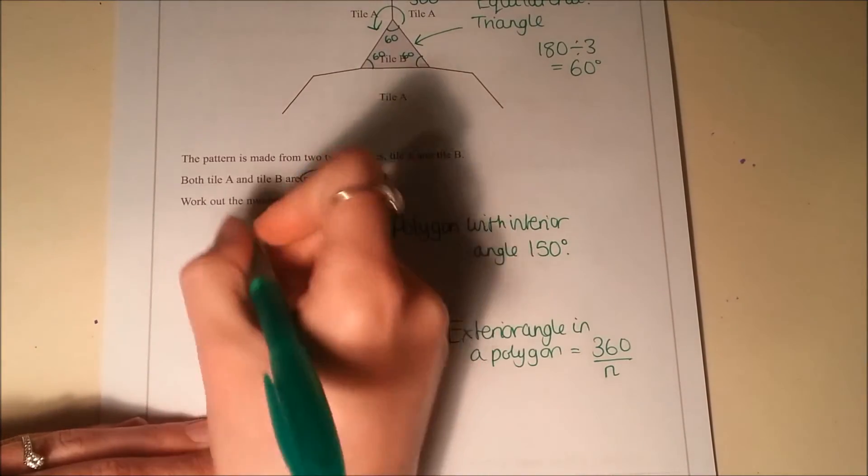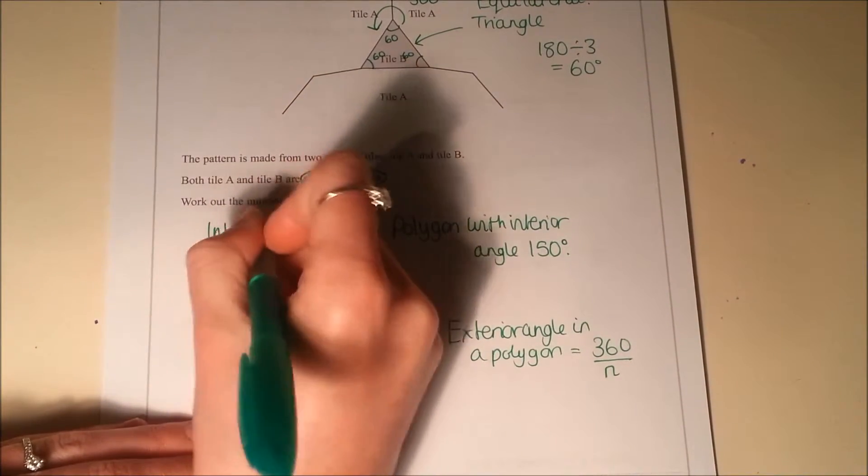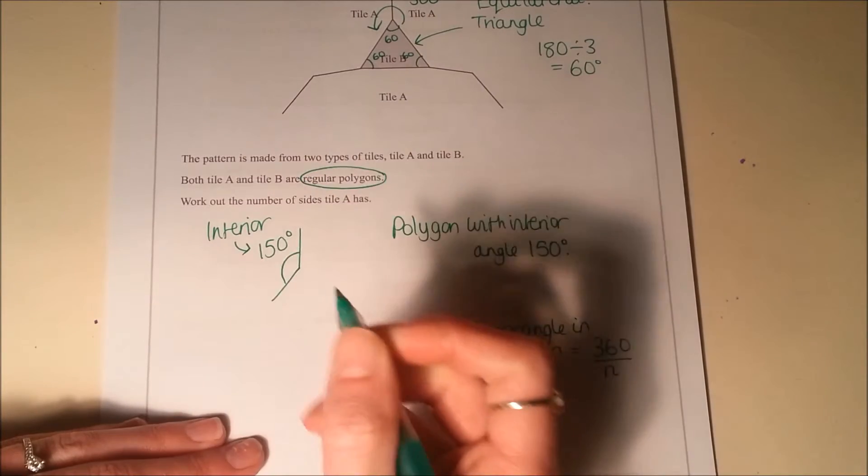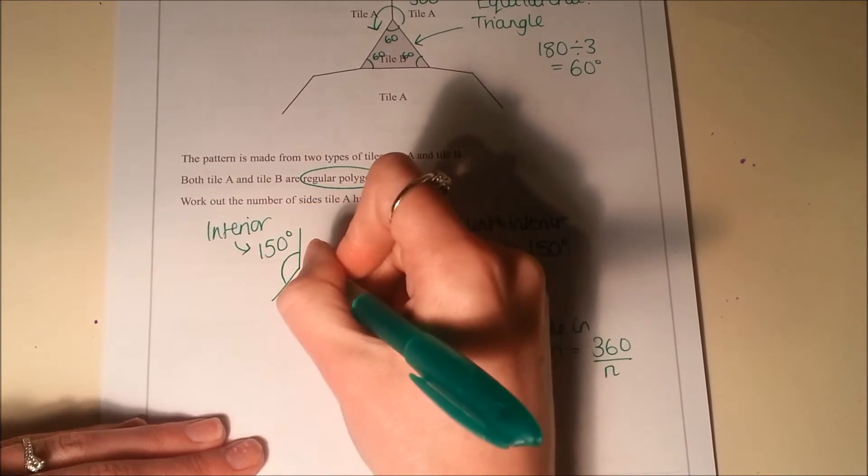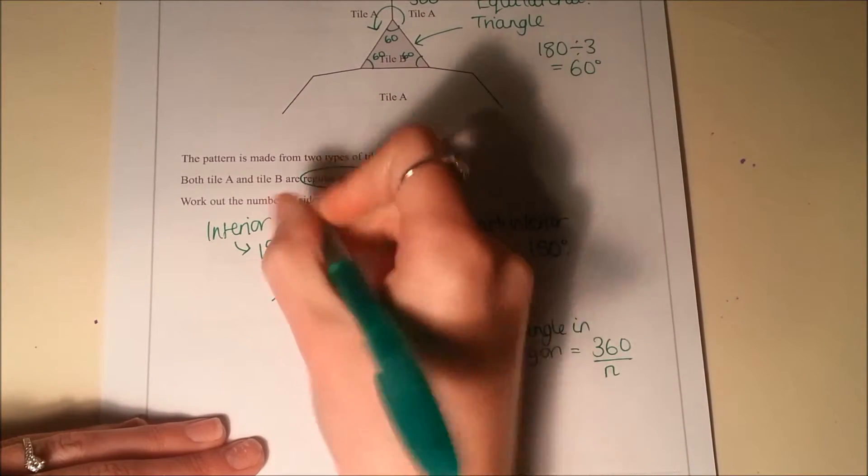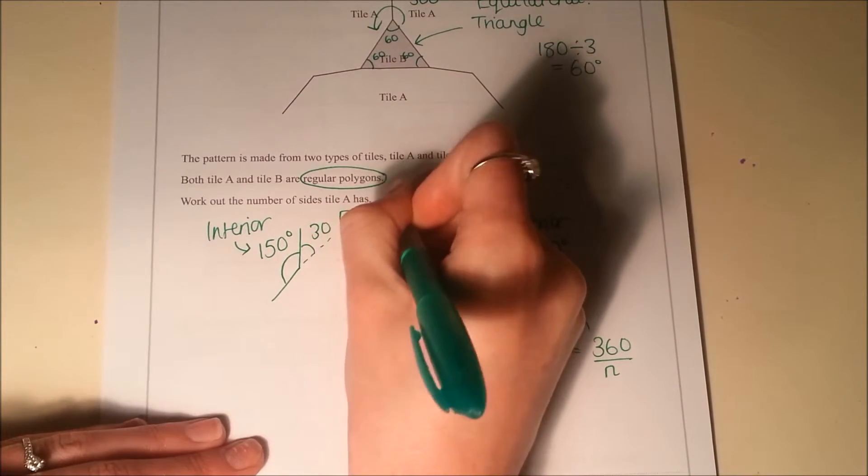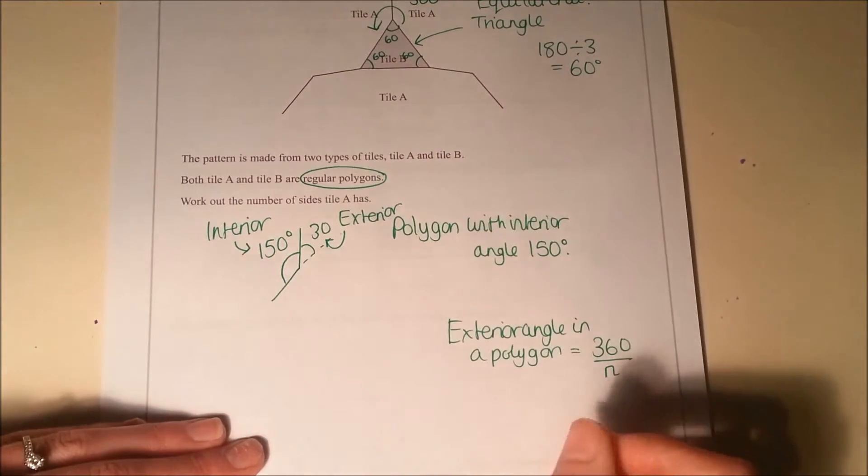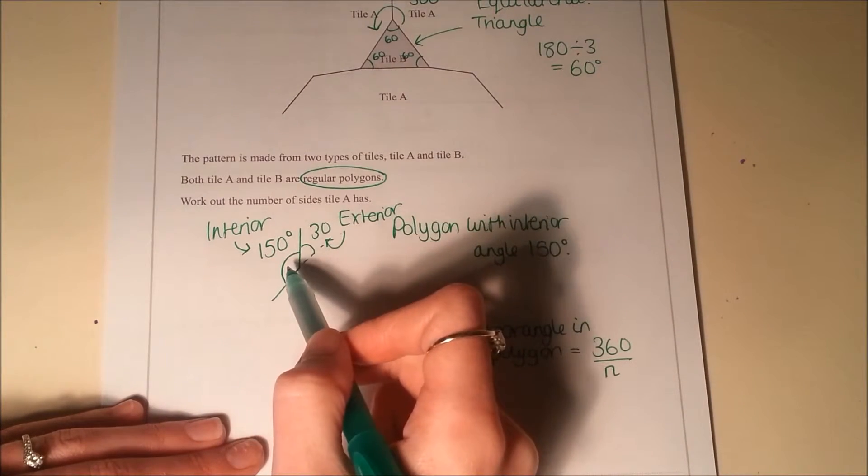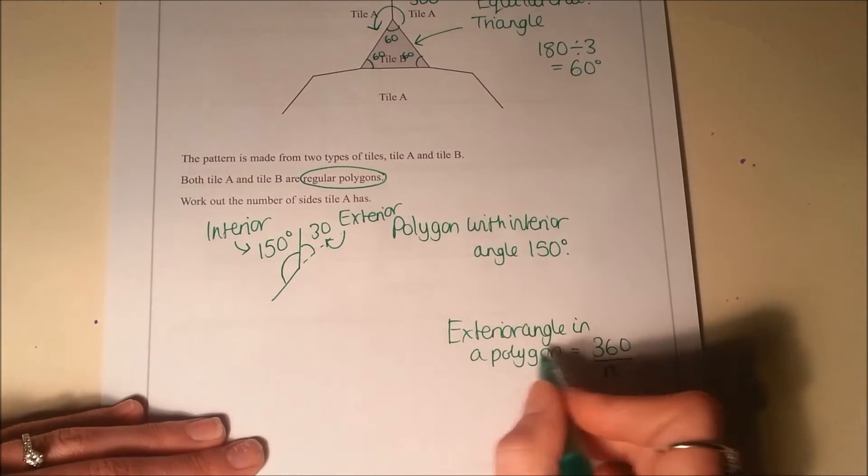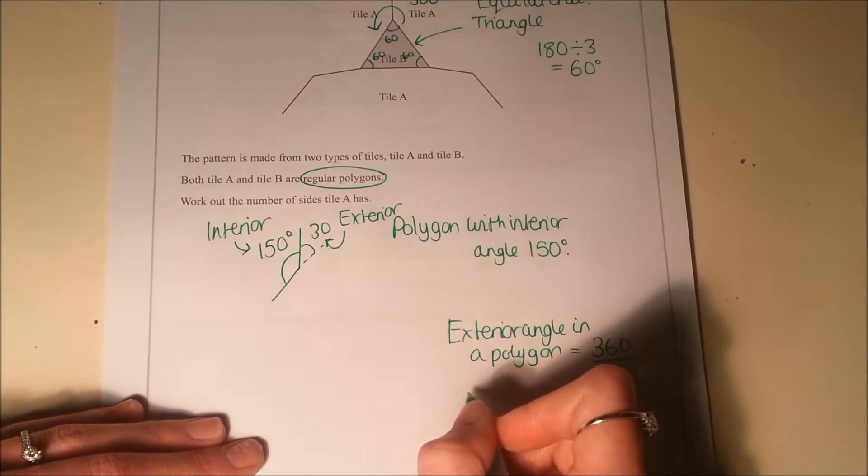So if the interior angle here is 150 degrees, then the exterior angle is 30 degrees because the interior plus the exterior make 180. So I know that the exterior angle here is 30 degrees.